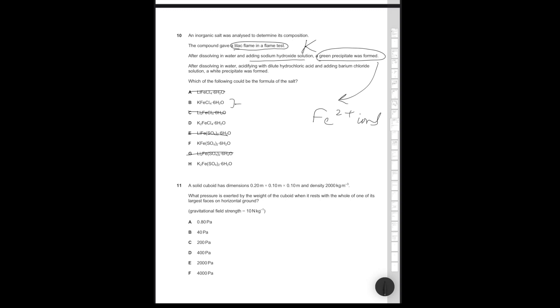After dissolving in water and adding sodium hydroxide solution, a green precipitate formed. What that tells us is that we have Fe2+ ions present because only Fe2+ ions are going to give a green precipitate when you add sodium hydroxide. We can get rid of any compound ion that only has one potassium. So it's between these two, is it a chloride salt or is it a sulfate salt?